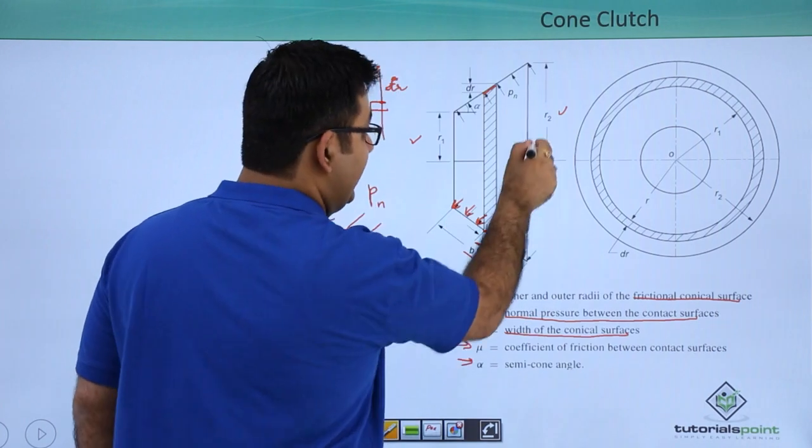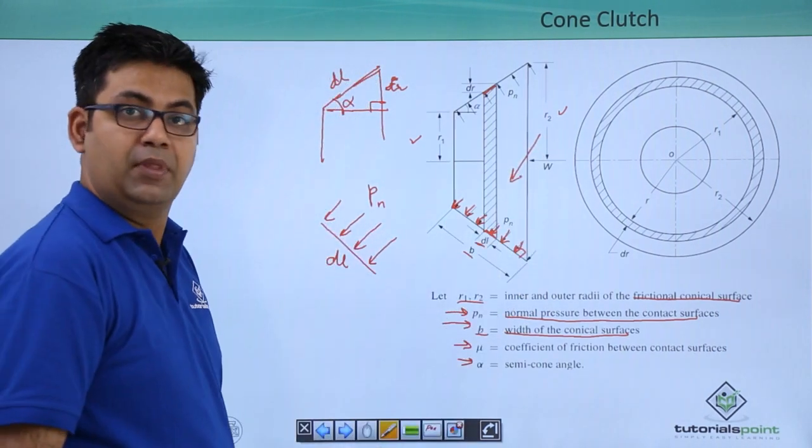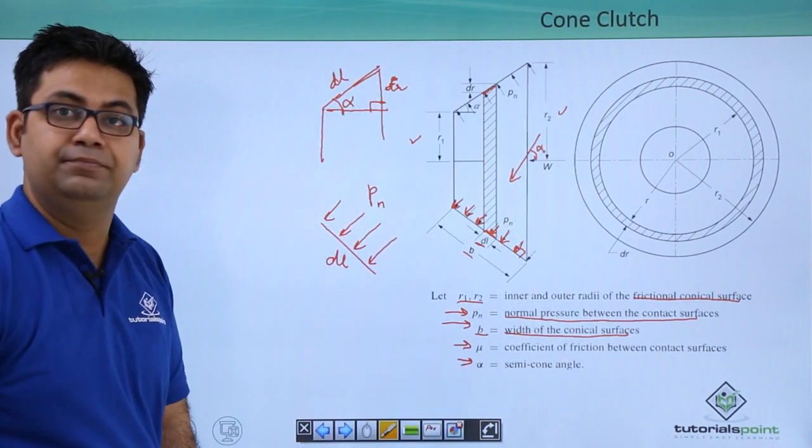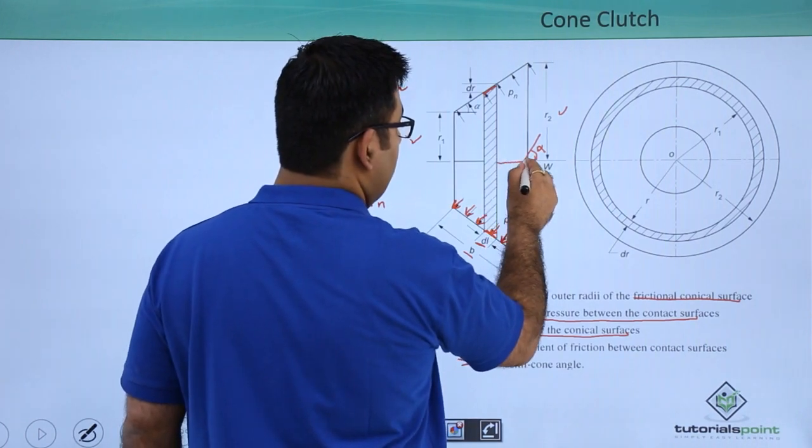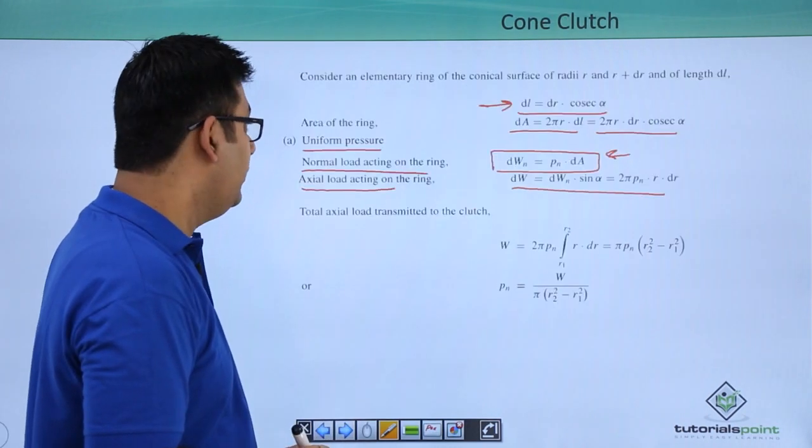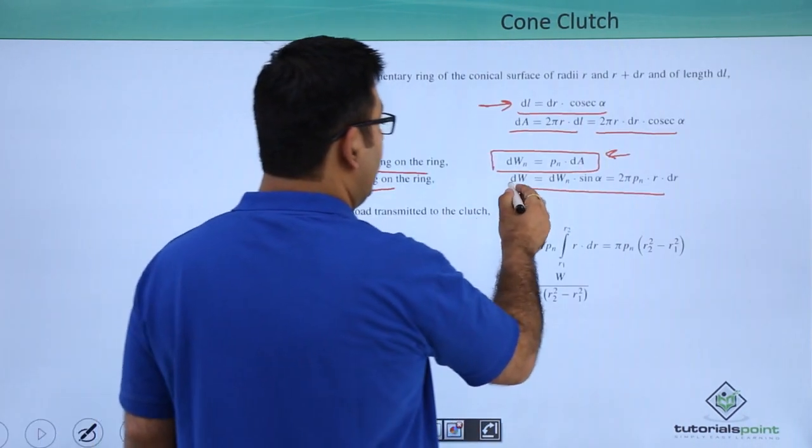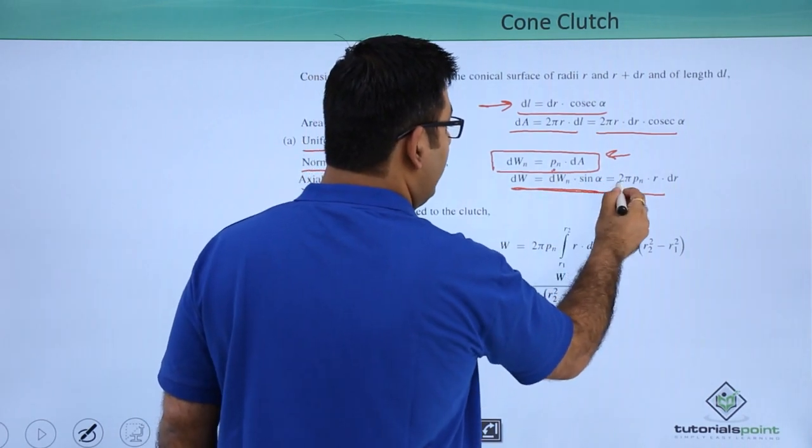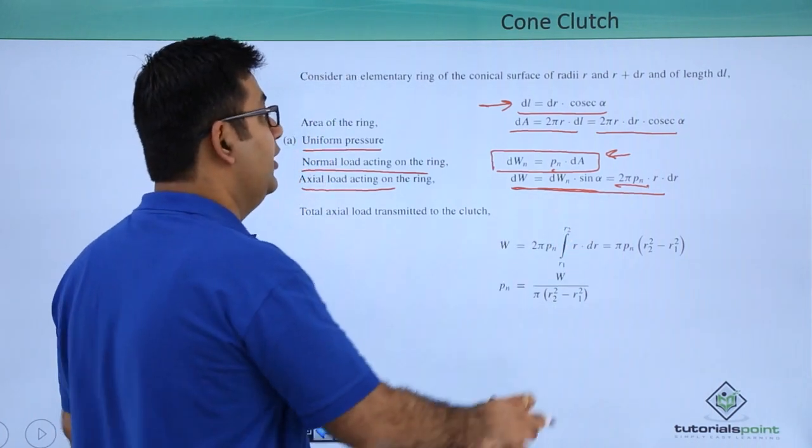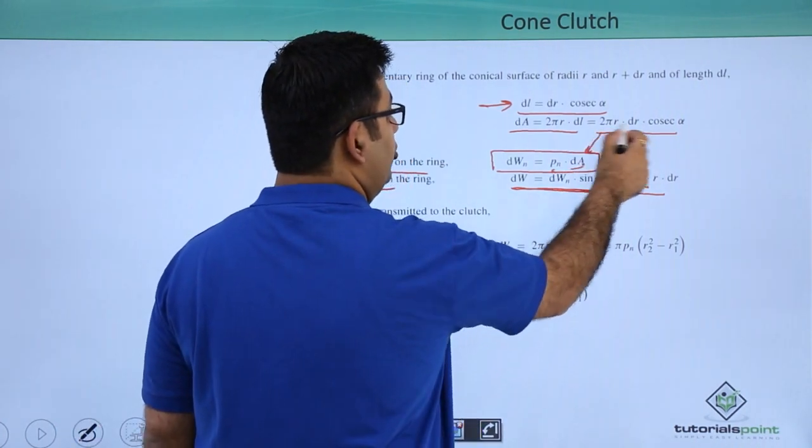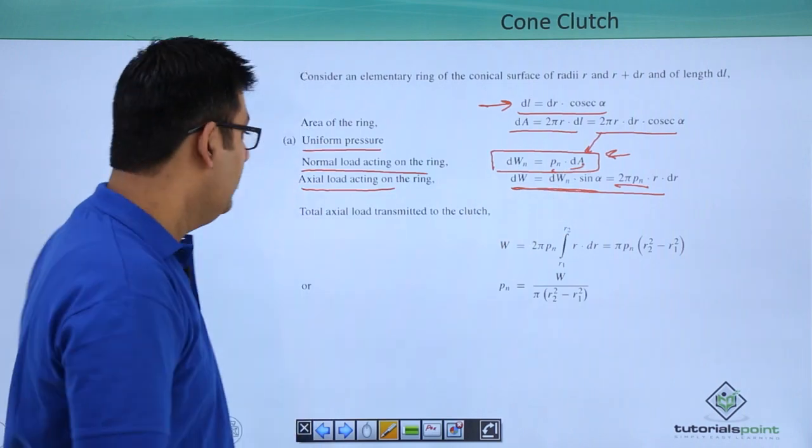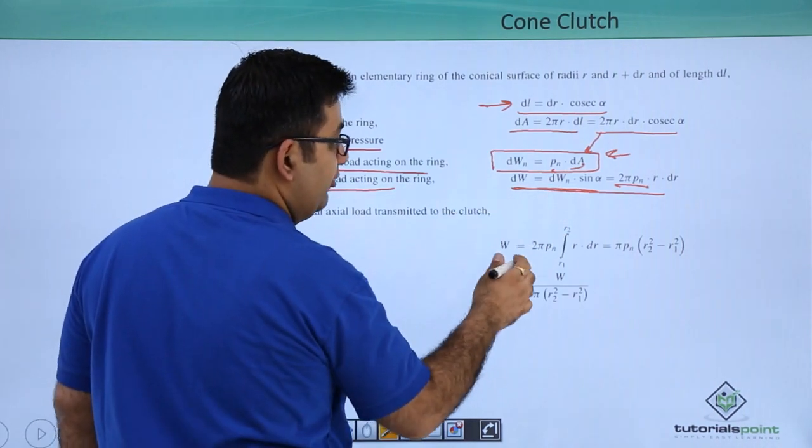Your axial load is this and your normal load to the surface is like this, and this angle is alpha. So you can see that there is a relation between these two: you will have dWn sin alpha. We know the value of dWn which is 2 pi pn r dr.